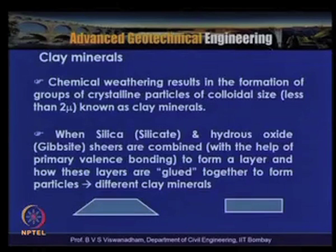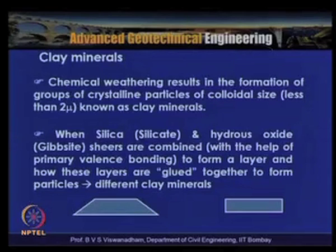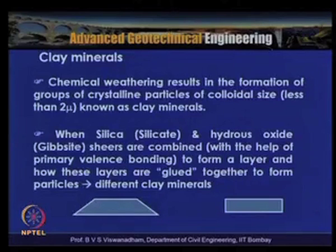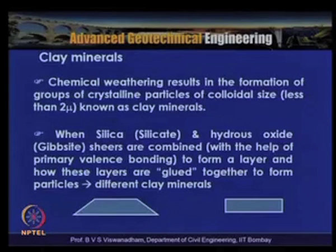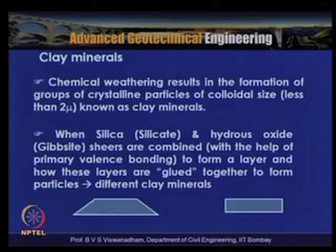Clay minerals form when silicate sheets and hydroxide (gibbsite) sheets are combined using primary valency bonds to form a layer, and these layers are then glued together to form particles. Chemical weathering results in the formation of groups of crystalline particles of colloidal size (less than 2 microns) defined as clay minerals.